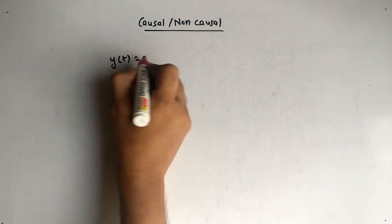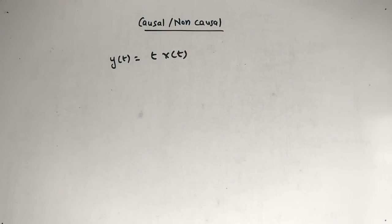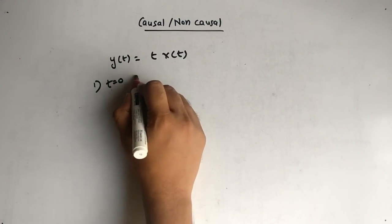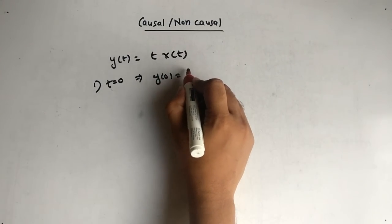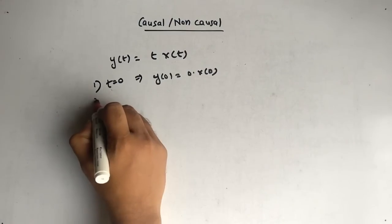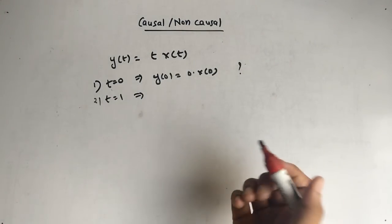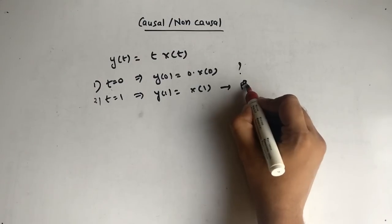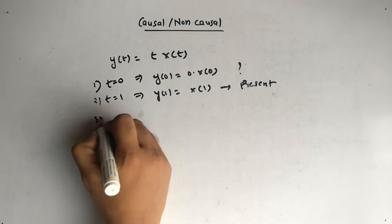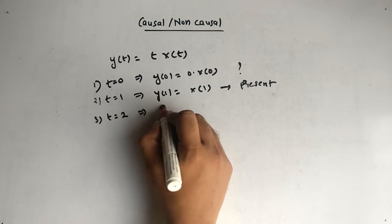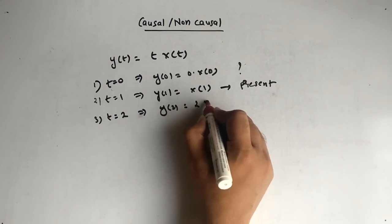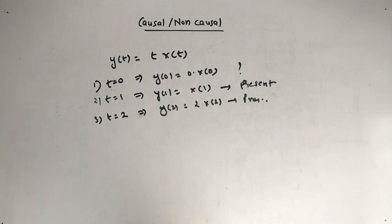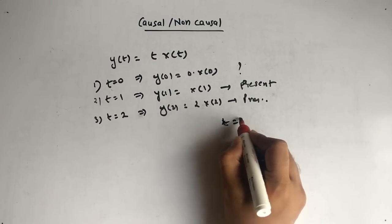This next example is very interesting: y(t) = t·x(t). At t equal to 0, we get y(0) = 0·x(0). We're still unsure, so put t equal to 1: y(1) = x(1) — present value. At t equal to 2: y(2) = 2·x(2) — again present. The problem is that whatever value you put — t equal to 0, 1, 2, or n — you will always get the present value.